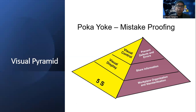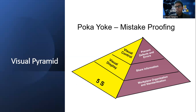Visual displays share information, and whoever the person working in the manufacturing environment, based on their interest, they can gather the information. But when we move to visual control, what does visual control do? Through visual control, a manufacturing organization can prevent and detect errors.